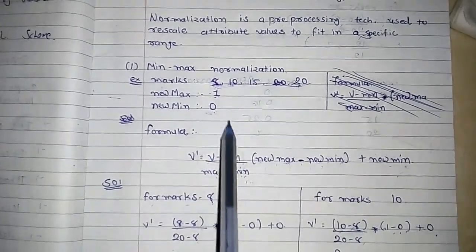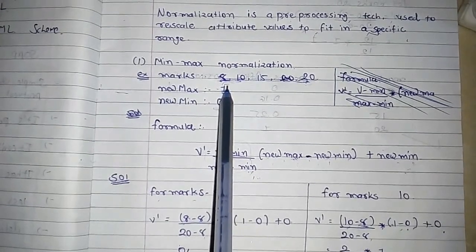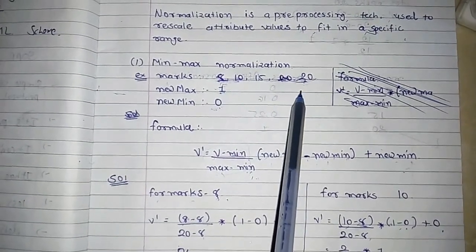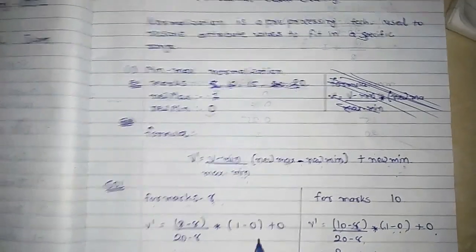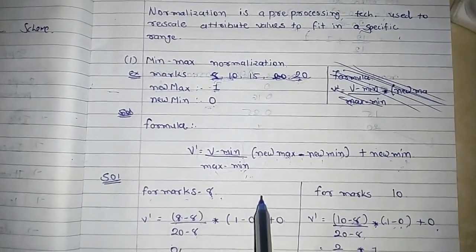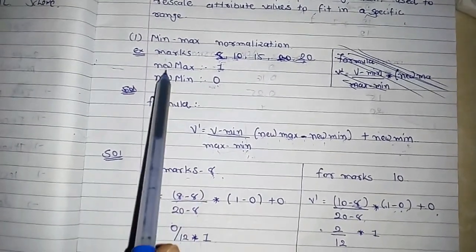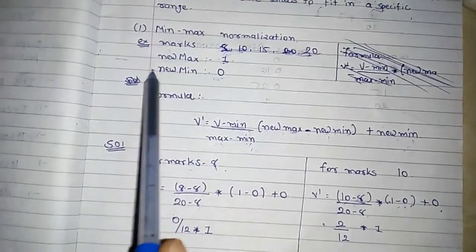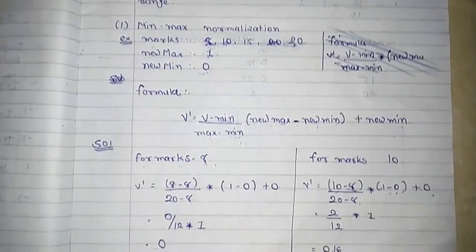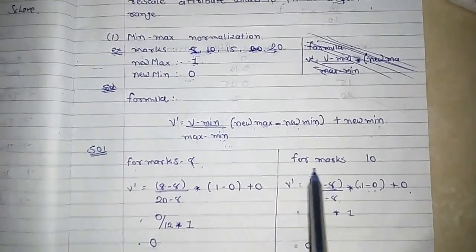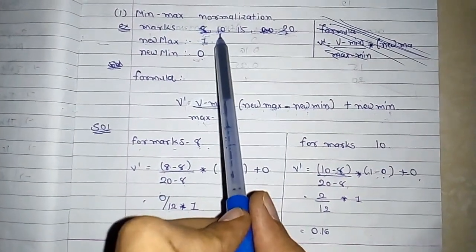So the calculation is: (8 - 8) / (20 - 8) × (1 - 0) + 0. The maximum value from the data is 20, the minimum is 8, new max is 1, and new min is 0. So you will get 0.